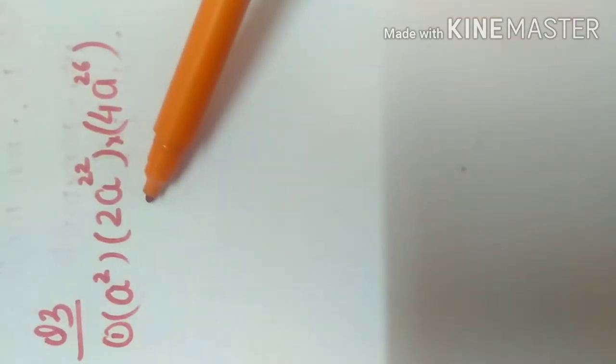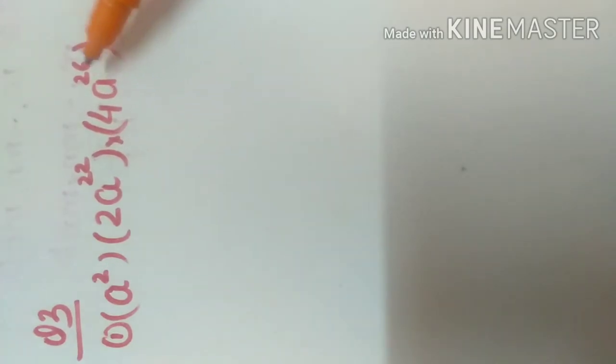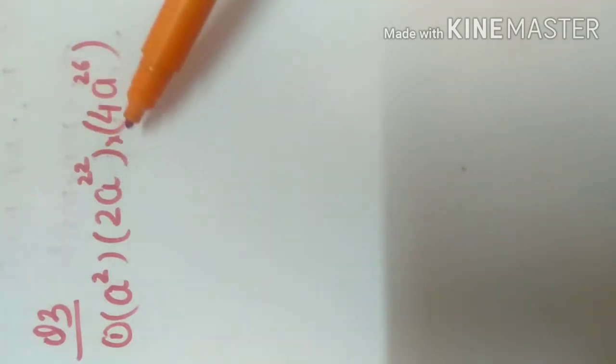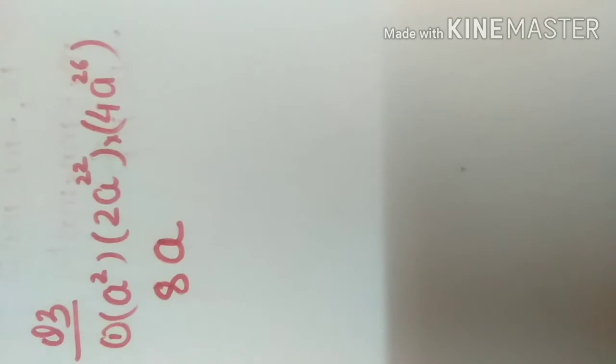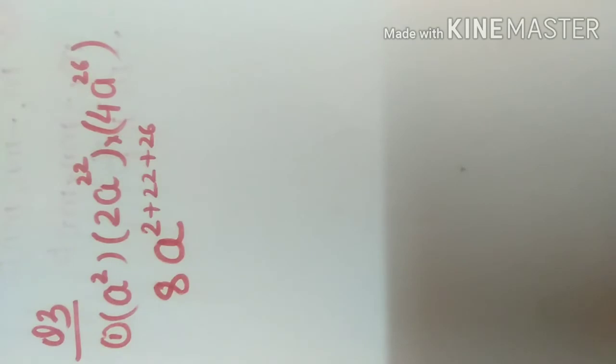Question 3: a squared multiplied to 2a to the power 22, multiplied to 4a to the power 26. First we multiply the constants: 4 into 2 is 8. Then we add all the powers since they are in multiplication: 2 plus 22 plus 26 equals 50. So the answer is 8a to the power 50.